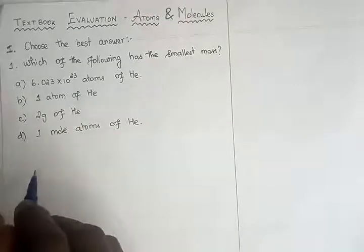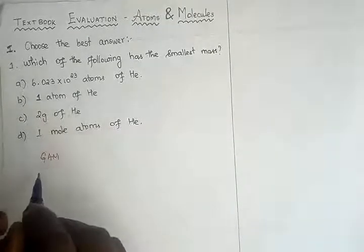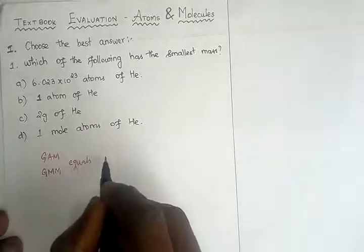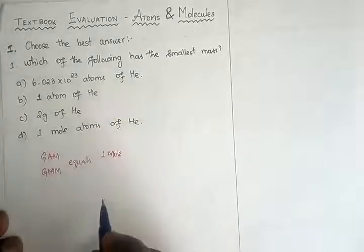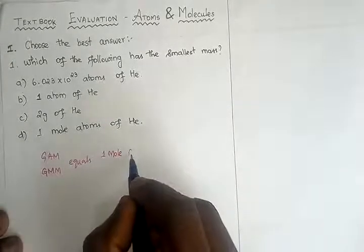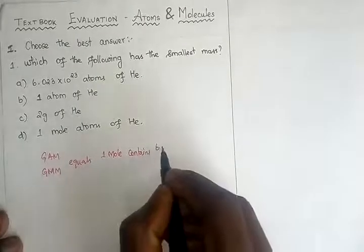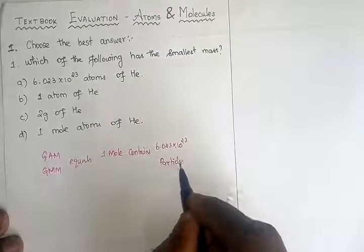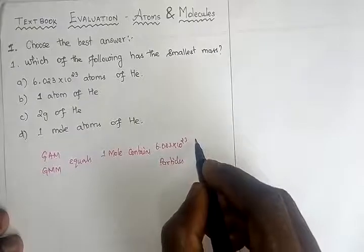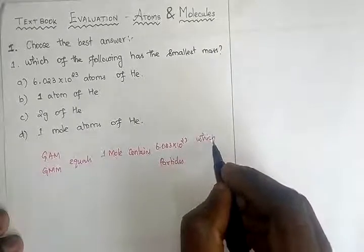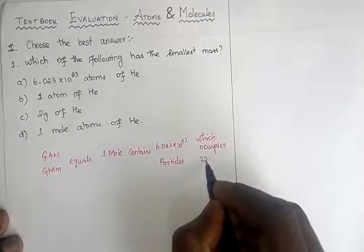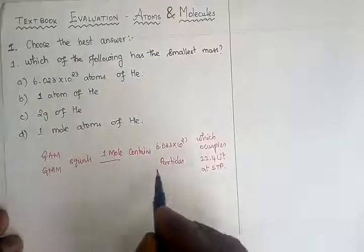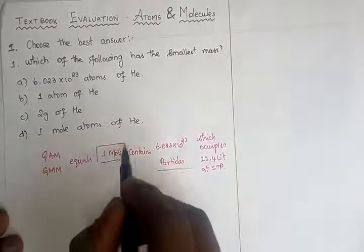To solve this, we recall the concept: gram atomic mass or gram molecular mass equals one mole. This one mole contains 6.023 × 10²³ particles, and for a gas it occupies 22.4 liters at STP. Note that one mole and 6.023 × 10²³ particles are the same thing.